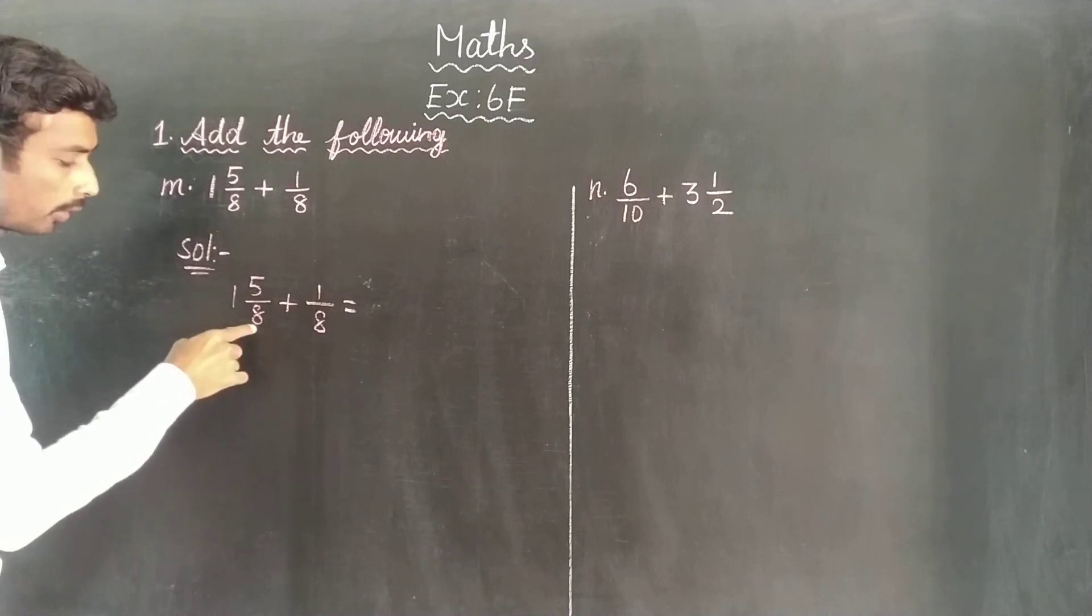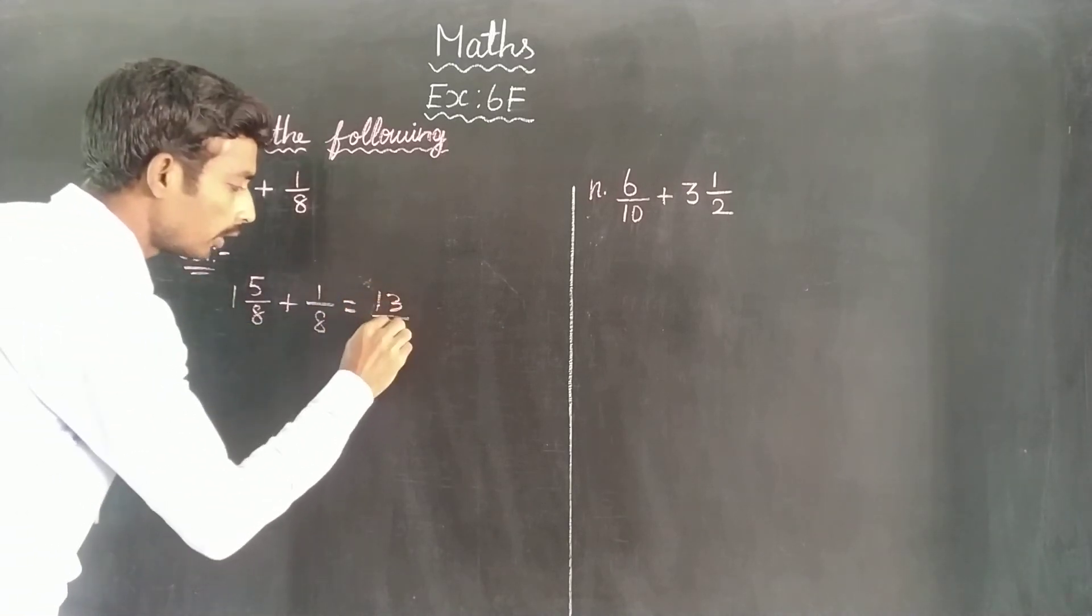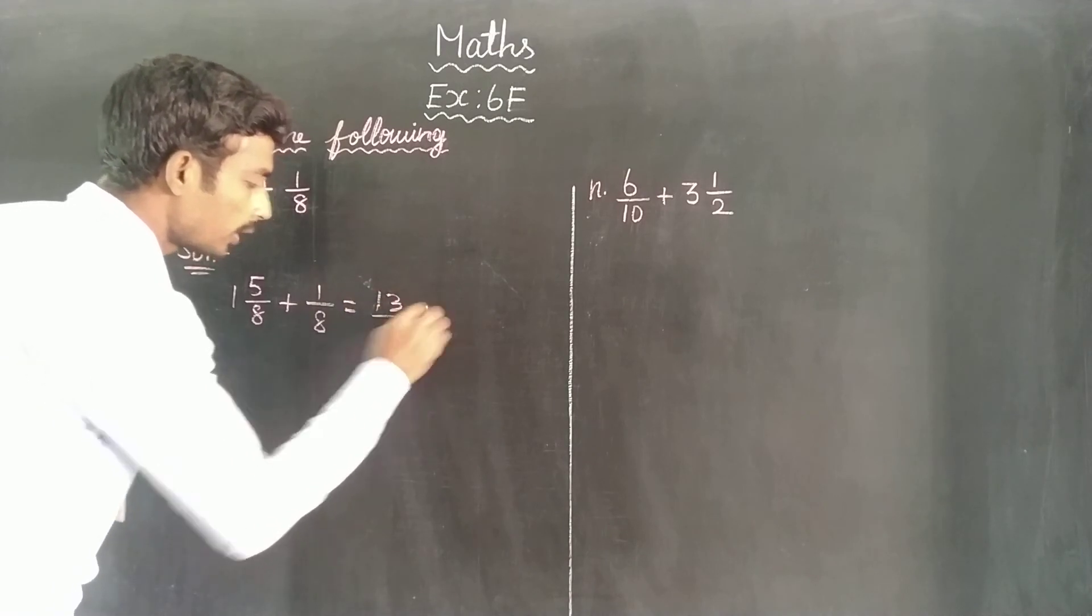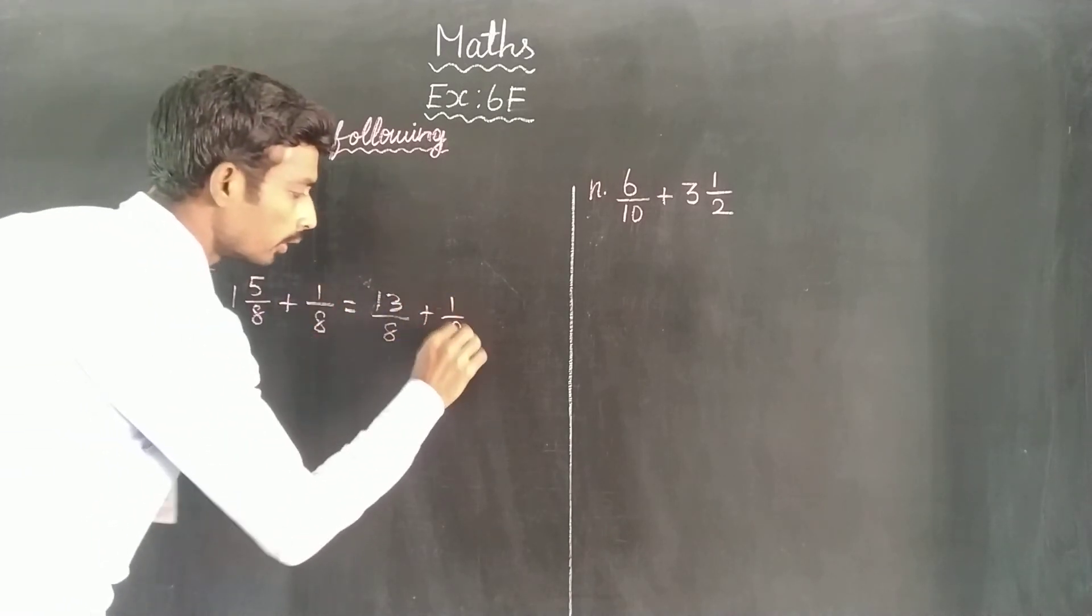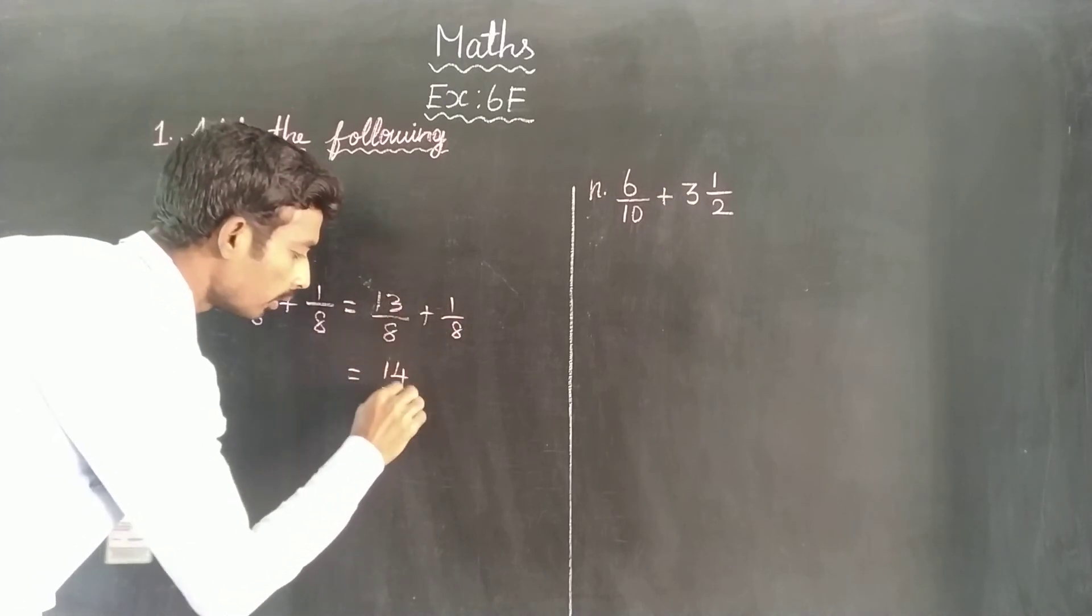plus 1/8 equals. The mixed fraction: the denominator is 8. So 8 plus 5 is 13, giving us 13/8 plus 1/8, which equals 14/8.